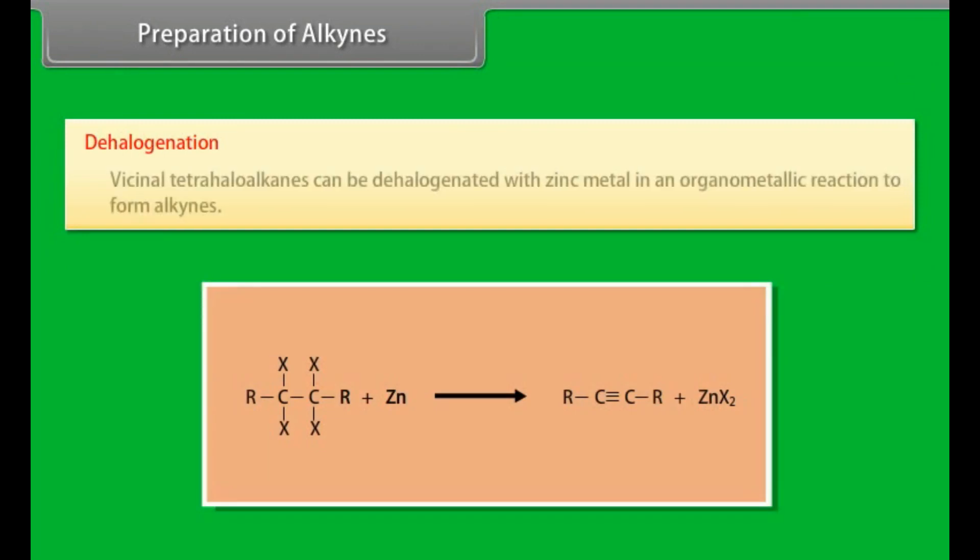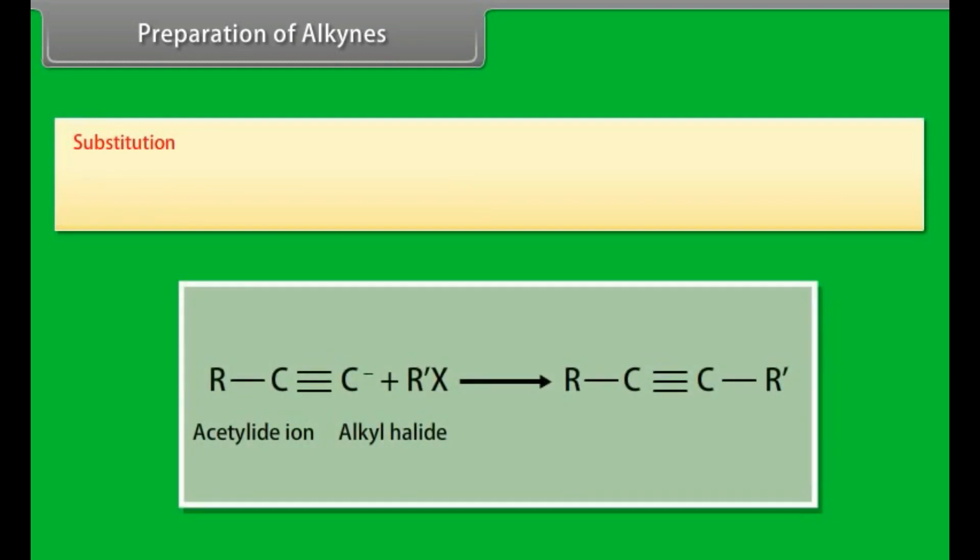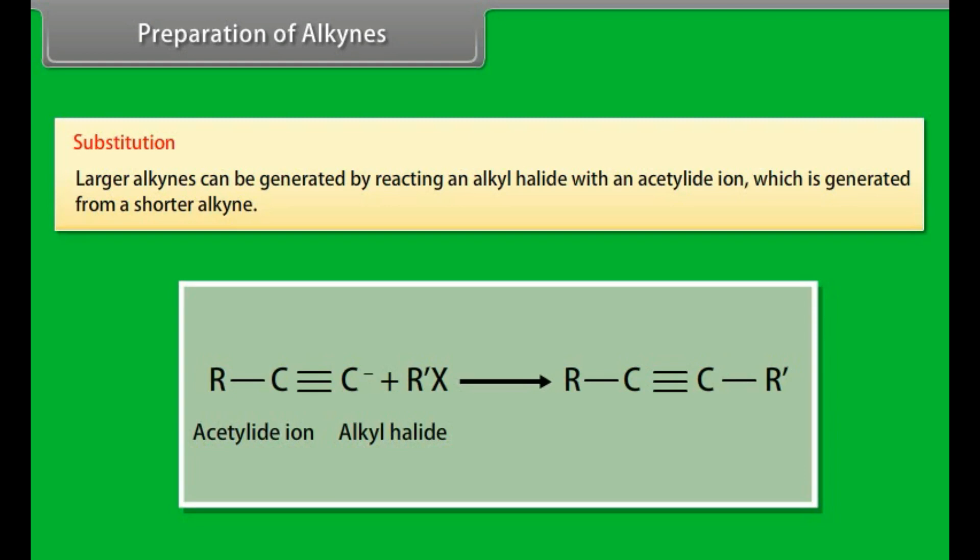Dehalogenation. Vicinal tetrahaloalkanes can be dehalogenated with zinc metal in an organometallic reaction to form alkynes. Substitution. Larger alkynes can be generated by reacting an alkyl halide with an acetylide ion, which is generated from a shorter alkyne.